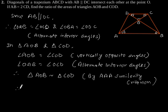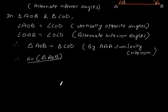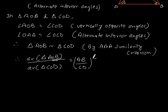Therefore, area of triangle AOB by area of triangle COD is equal to AB by CD whole square. And since AB is equal to 2CD,